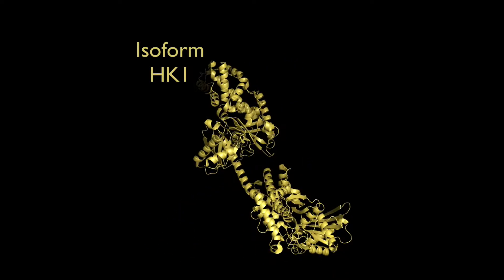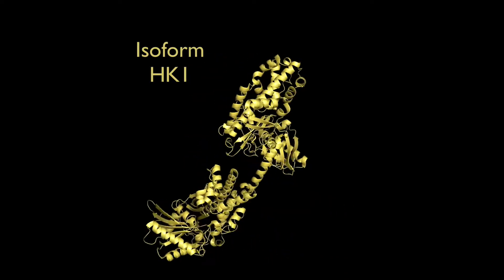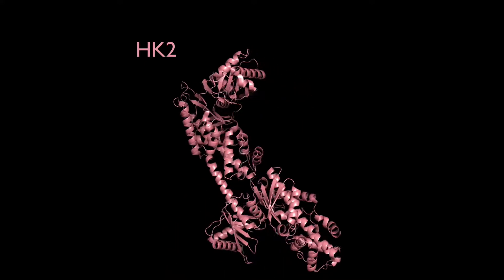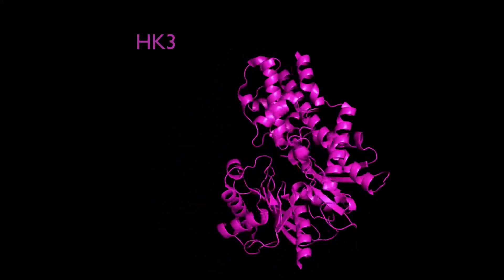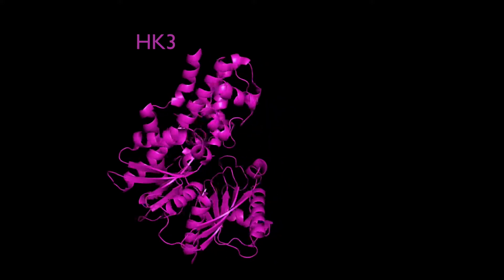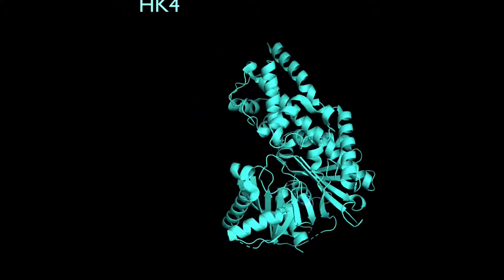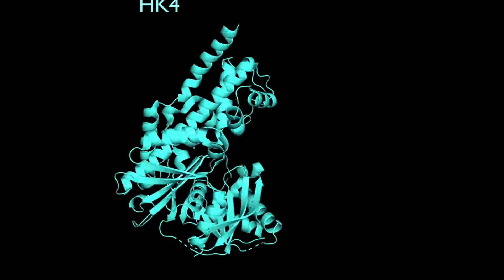Now let's look at hexokinase. There are four isoforms of this enzyme. Isoforms are enzymes that perform the same reaction but have different amino acid sequences. First, let's look at hexokinase 4, also called glucokinase.